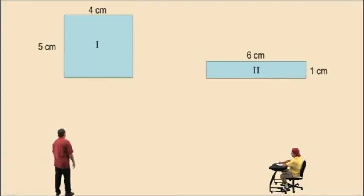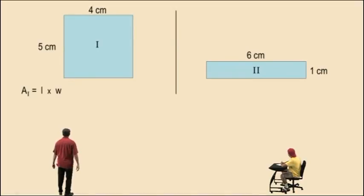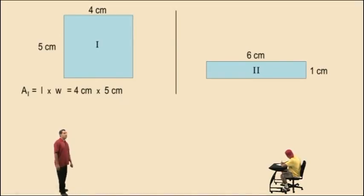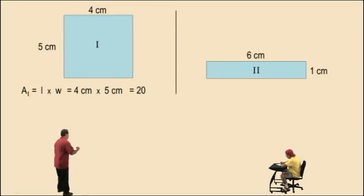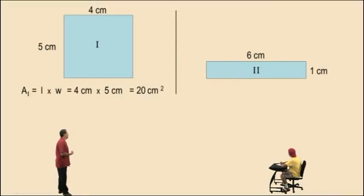There we are. To find the area of a rectangle, it's length times width. So area 1 is length times width, which is 5 centimeters times 4 centimeters, or 4 centimeters times 5 centimeters. And 4 times 5 is 20, and centimeters times centimeters is represented using the exponent — that becomes centimeters squared. So our answer for the area of rectangular shape 1 is 20 centimeters squared.